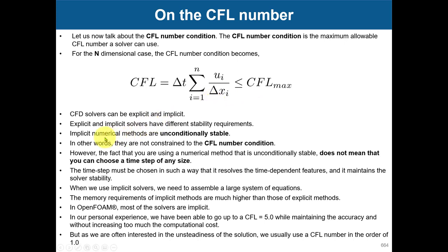Explicit solvers do have a limit on the maximum CFL number. For some it's one, for some it's two, for some it's 0.5. If you go larger than that CFL number with explicit solvers, they will immediately diverge. You can do a linear stability analysis using Fourier methods to find that limit, and you will see that they diverge immediately.